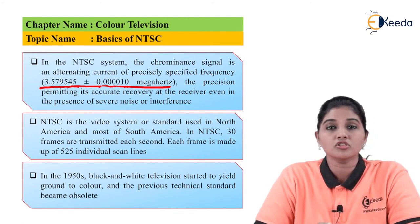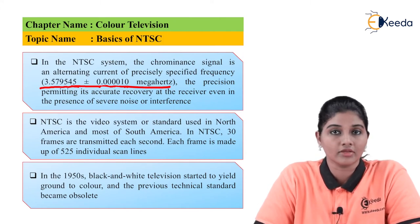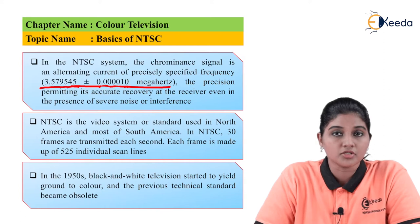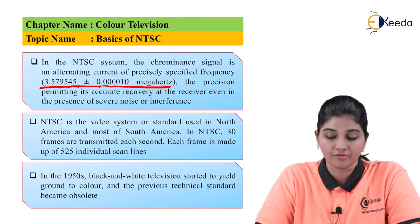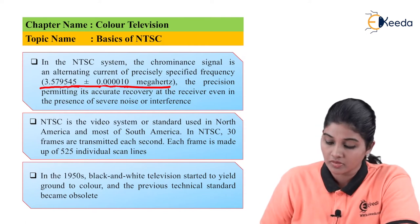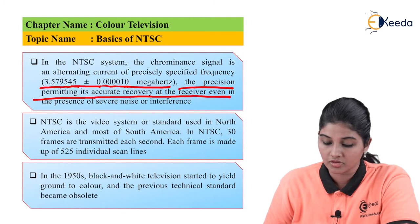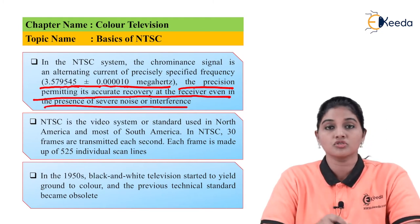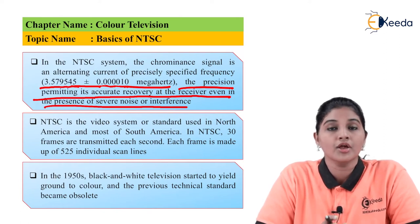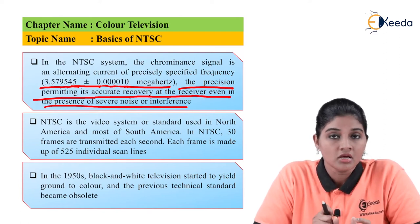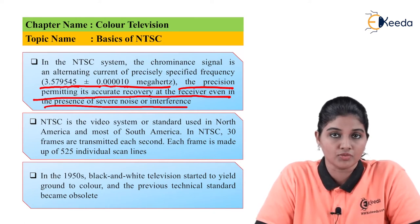Because of this precise value, it is possible to accurately recover the signal at the receiver. For accurate recovery of the signal, the value of frequency is precisely defined. This precise value permits accurate recovery at the receiver even in the presence of noise and interference. So even if noise or interference is present, the signal received by the receiver can be accurately recovered because of this fixed and accurate frequency value.